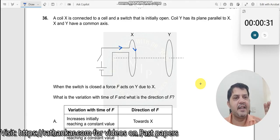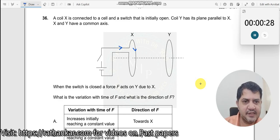So which means it passes like this over here. And then when the switch is closed, a force F acts on Y due to X. What is the variation with time of F and direction of F?